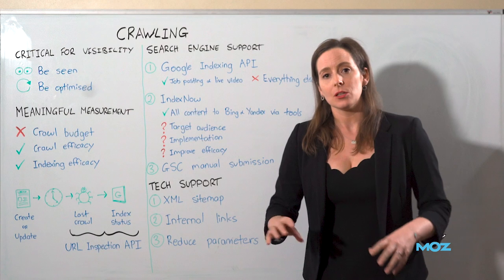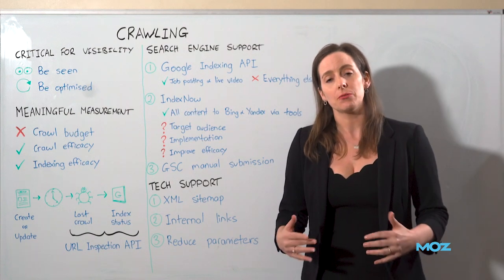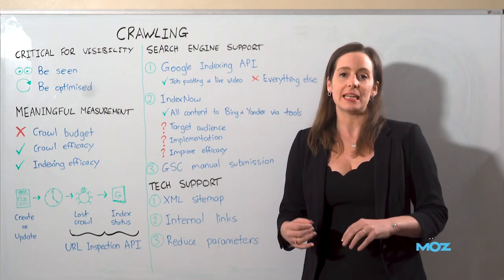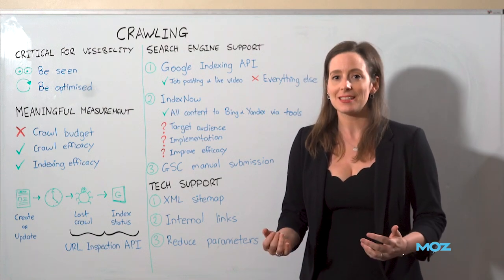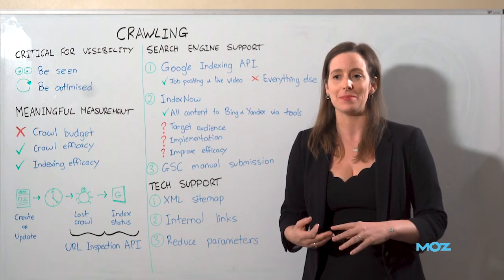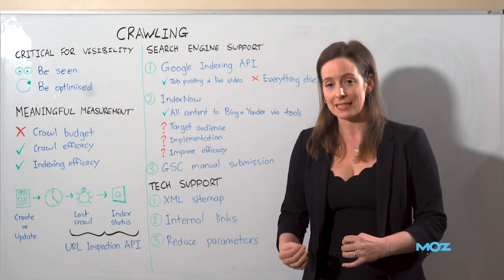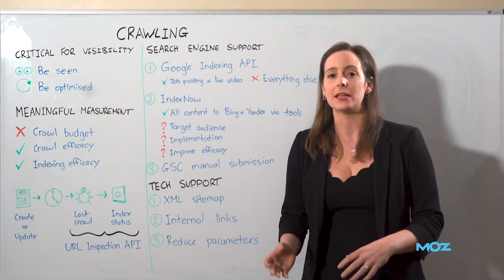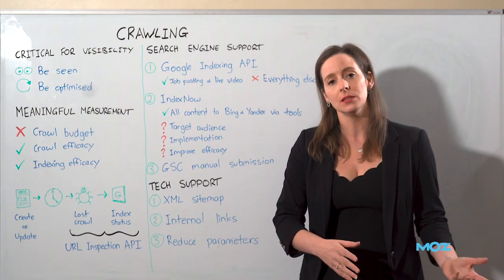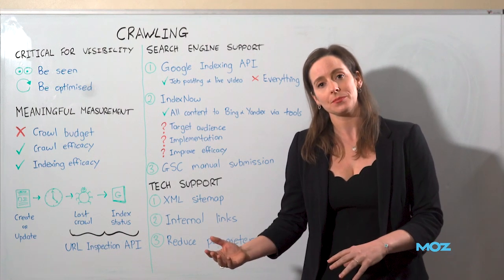With that information you can actually start calculating an indexing efficacy score as well — looking at when you've done a republication or first publication, how long does it take until Google indexes that page? Because crawling without corresponding indexing is not really valuable. When we start calculating real times, you might see it's within minutes, it might be hours, it might be days, or it might be weeks from when you create or update a URL to when Googlebot's crawling it.